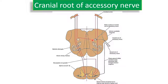The cranial root of the accessory nerve has its nucleus in the nucleus ambiguus. It has ipsilateral and contralateral innervation. The lower motor fibers arising from this nucleus travel via the cranial root of the accessory nerve, passing between the olive and inferior cerebellar peduncle, exit through the jugular foramen, unite with the vagus nerve, and are distributed to the pharynx, larynx, and soft palate via the pharyngeal and recurrent laryngeal branches of the vagus nerve.